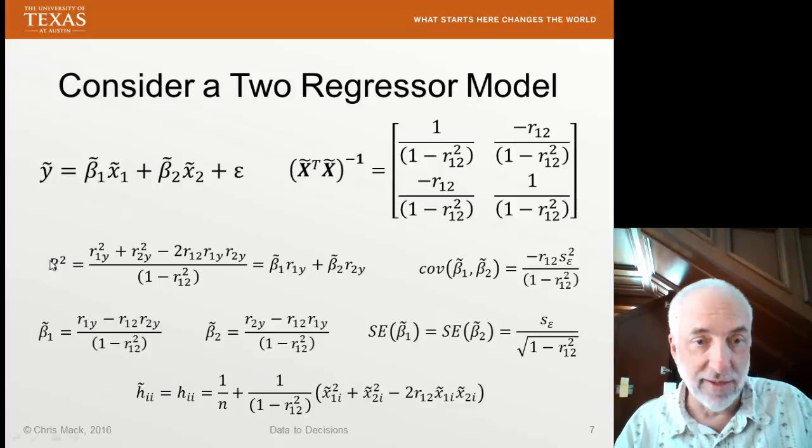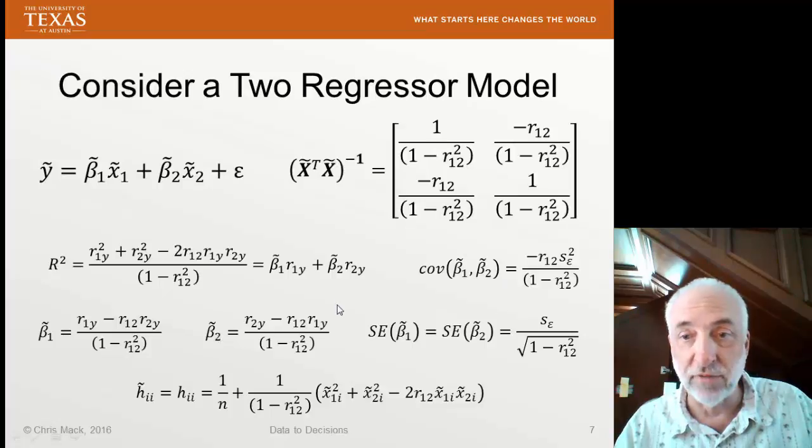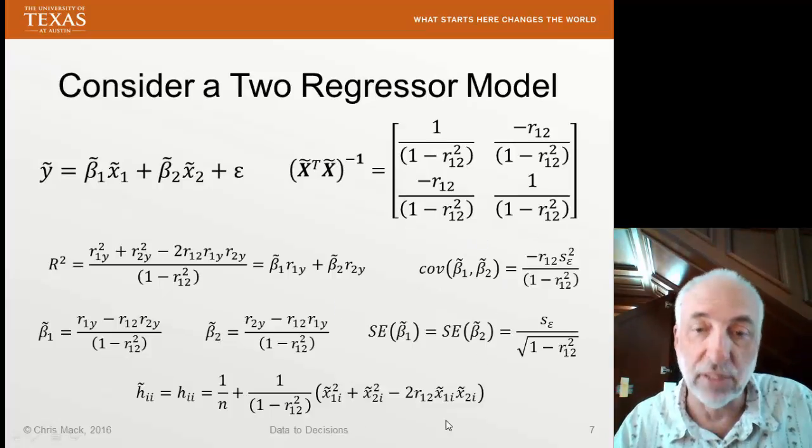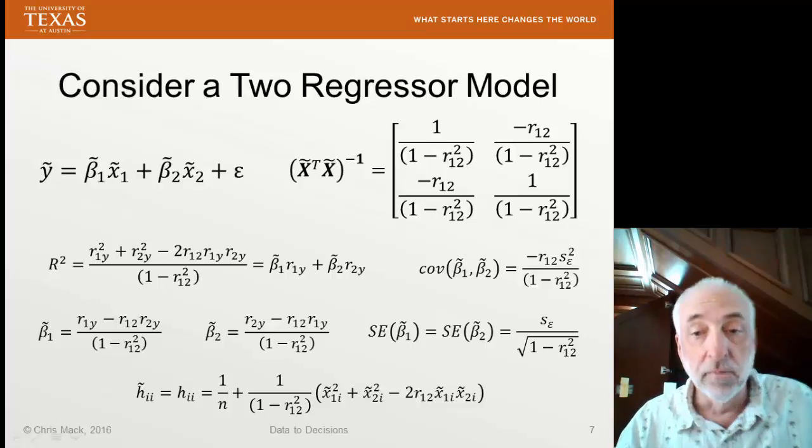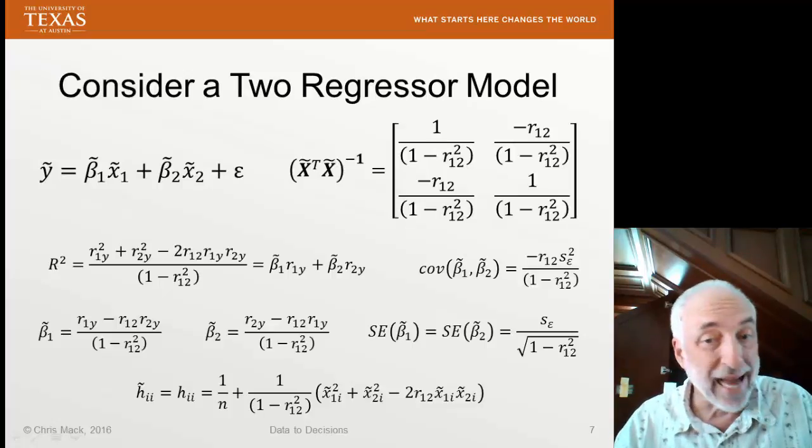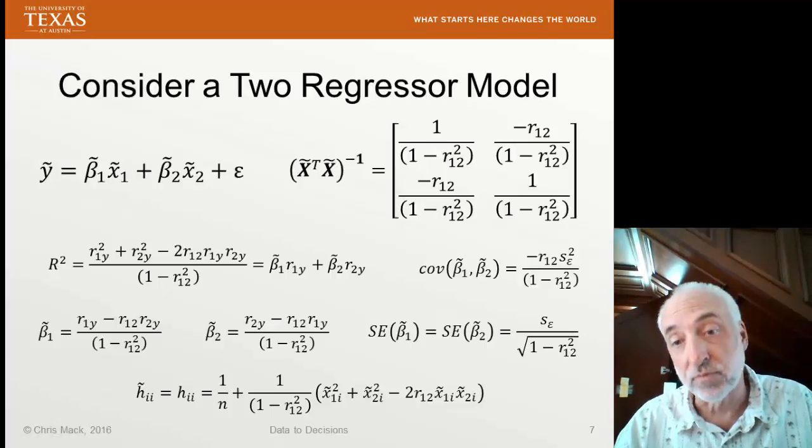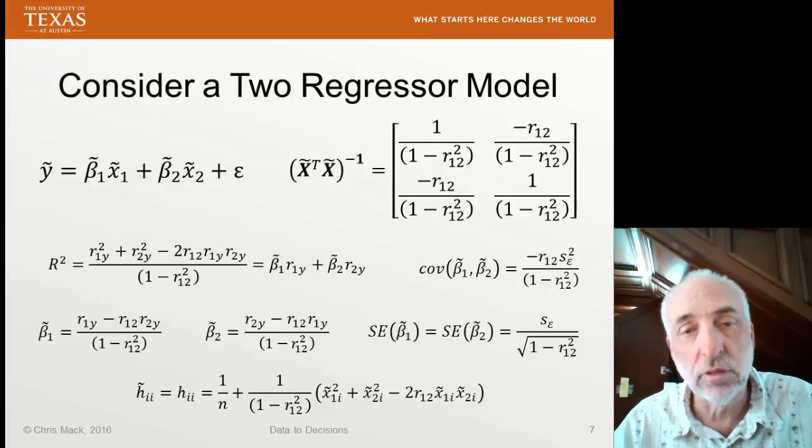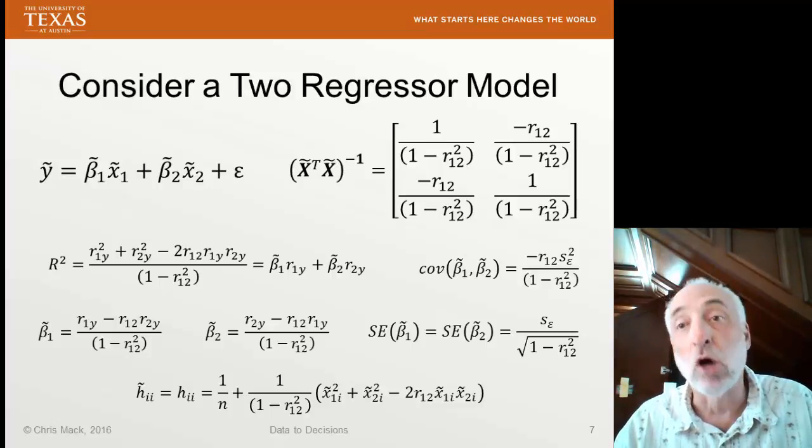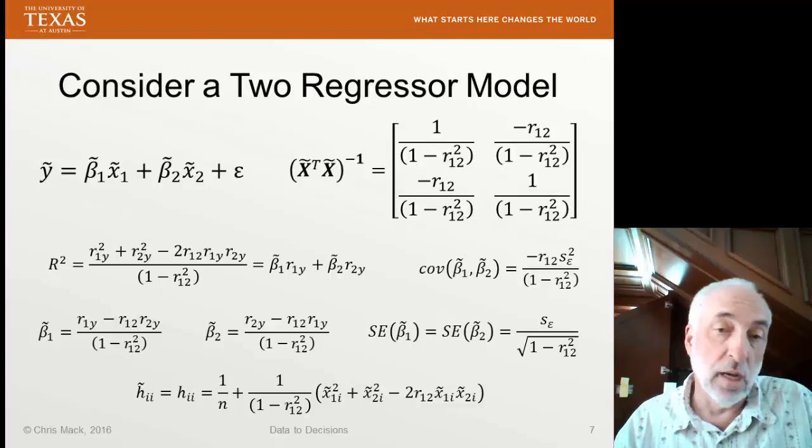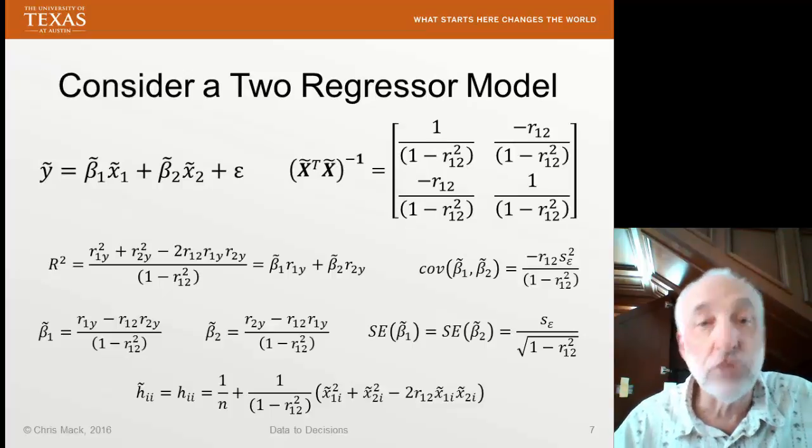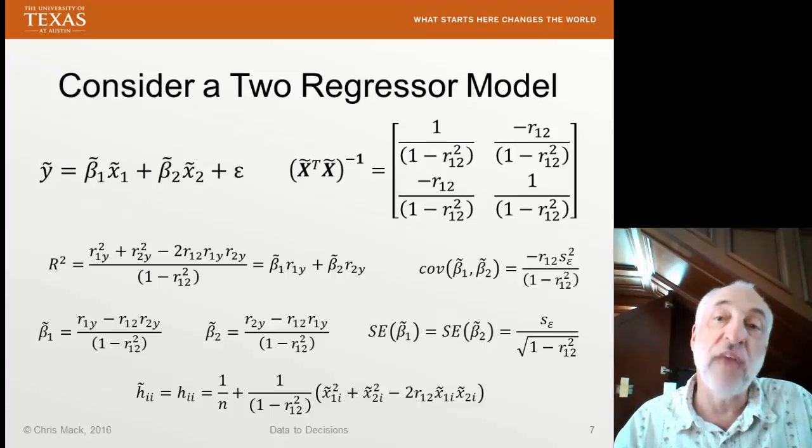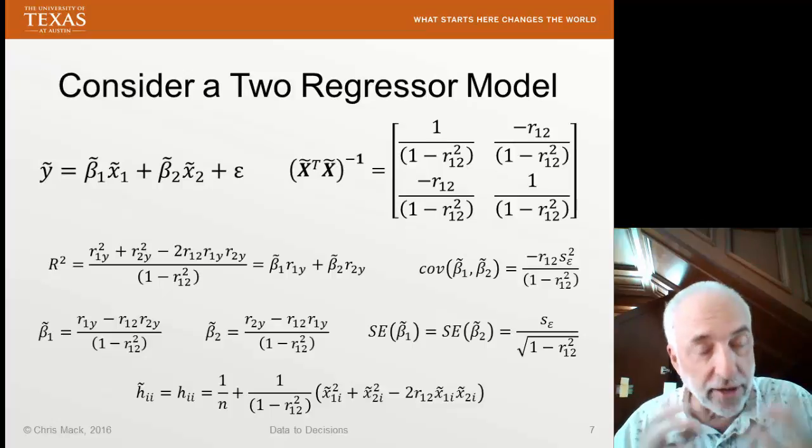From that, we can get an r squared, get our coefficients beta 1 and beta 2, standard errors of those coefficients, variance matrix, hat matrix. Everything you see is going to be put in terms of the regression correlation r12. Very convenient because it shows you the influence of that multicollinearity, that correlation between variables 1 and 2.